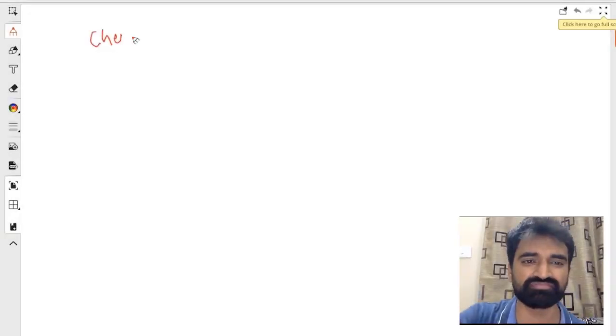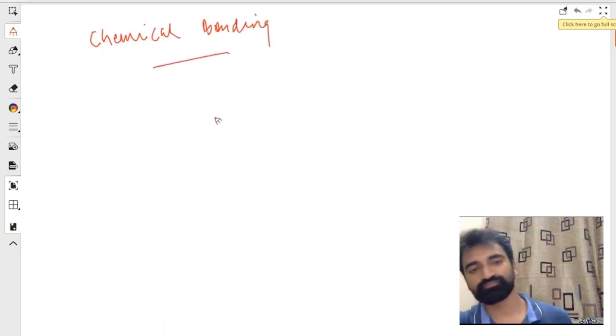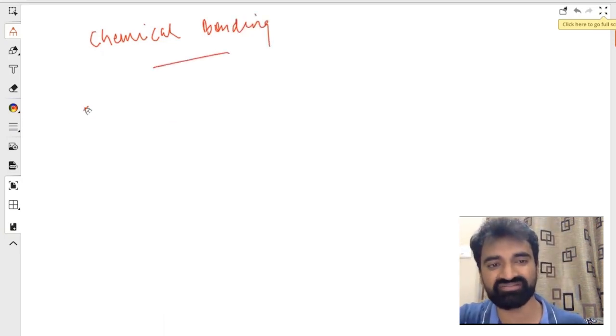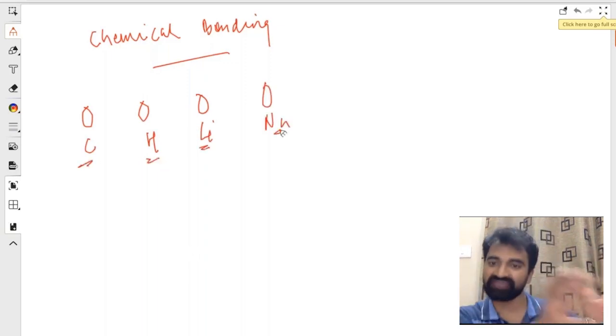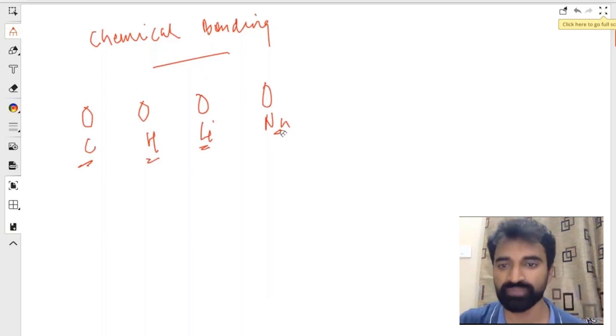First of all, what is chemical bonding? Very straightforward question. We know that we have elements—carbon, hydrogen, lithium, sodium—but we also know that these elements do not exist as atoms; they actually exist in a different form.